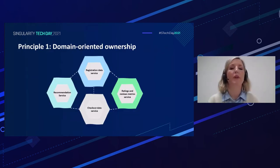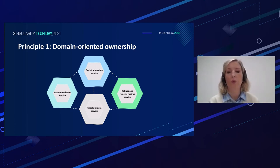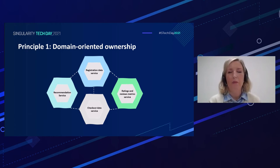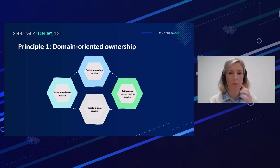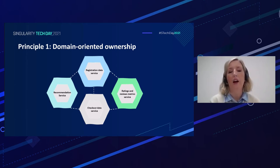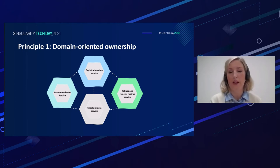The first principle is domain-oriented ownership — an organizational principle to align organization and engineering into the same business domain. This is not new; we already saw that with domain-driven design, which fostered the wide adoption of microservices. From the perspective of data products, we can have different types of domains. Some domains could be source-oriented, another could be more aggregated, or we could have a more customer-centric domain — like, for example, a tabular model available for reporting.